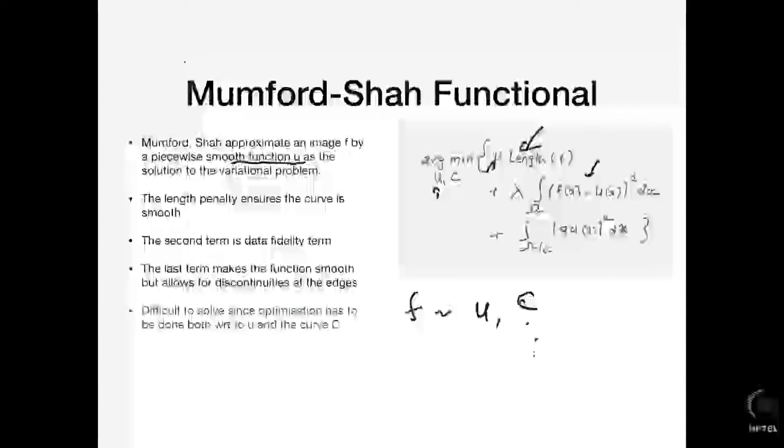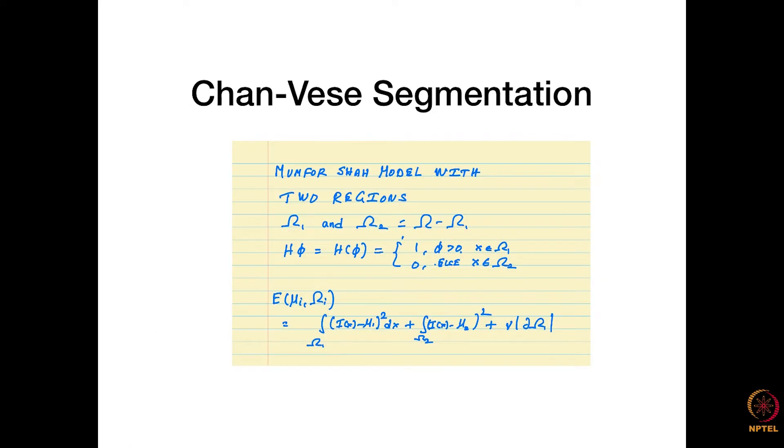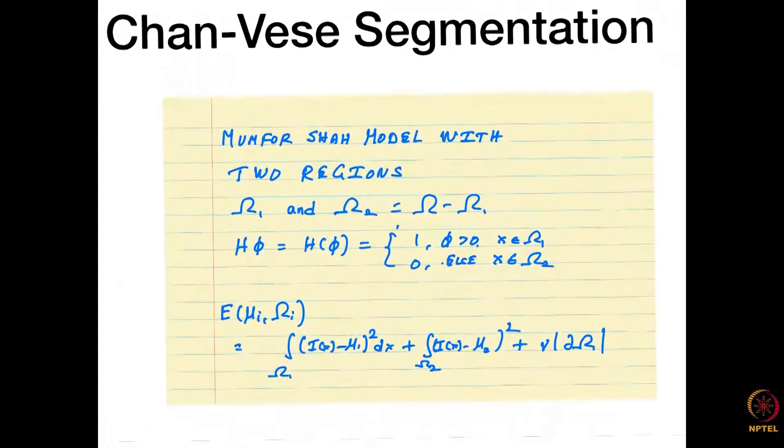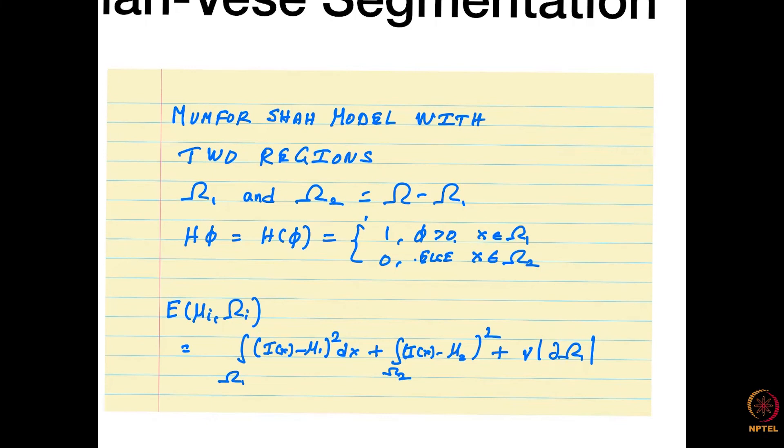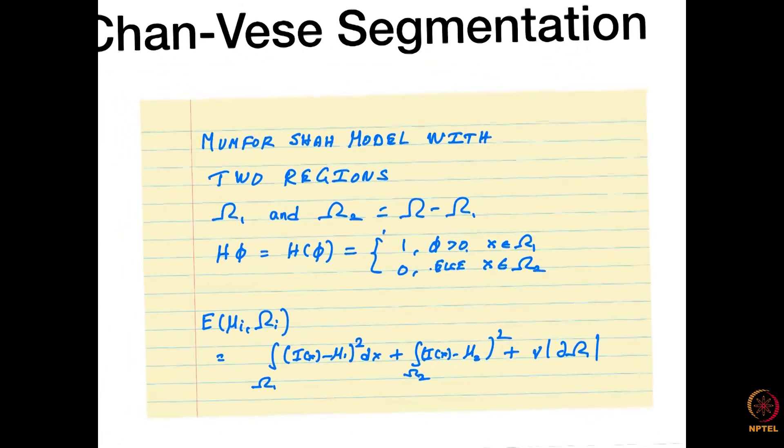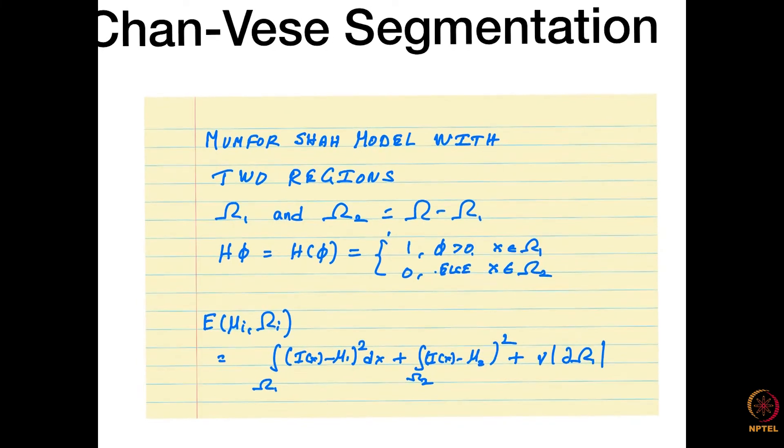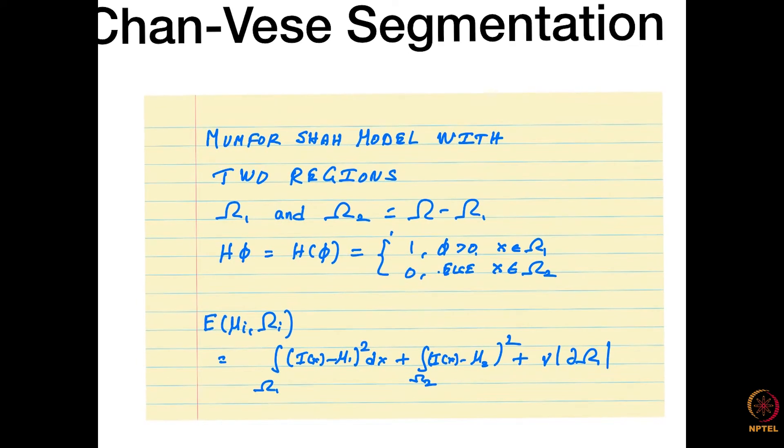An approximation to this problem is by this paper written by Chan and Vese, which is called the Chan-Vese segmentation algorithm. Their solution was to do it with two regions and with some tricks that are typically used to this day. It is a very popular paper. Most people tend to use this because implementation appears to be slightly easier than others. The idea is to do the Mumford-Shah model with two regions - omega 1 and omega 2, where omega 2 is everything other than omega 1.